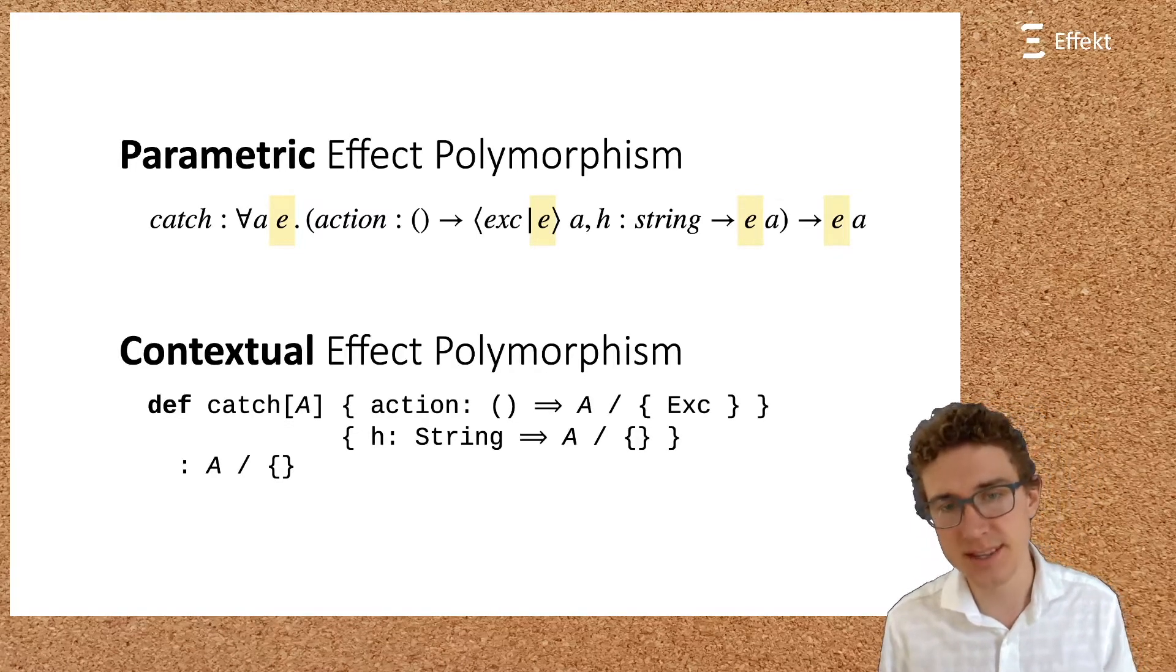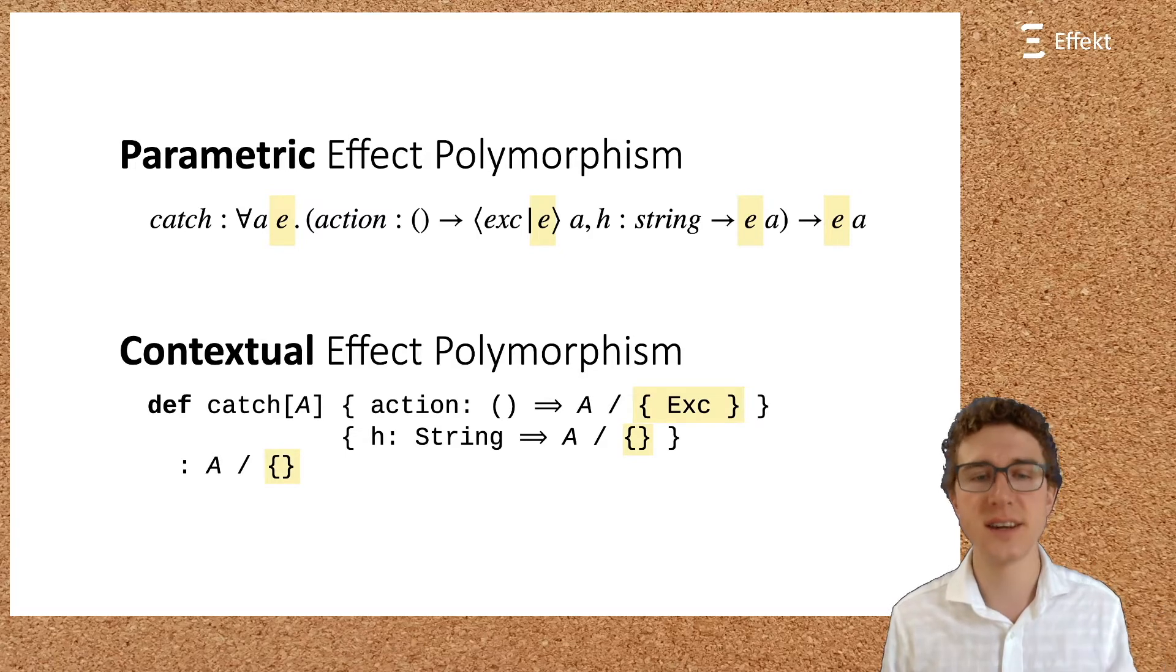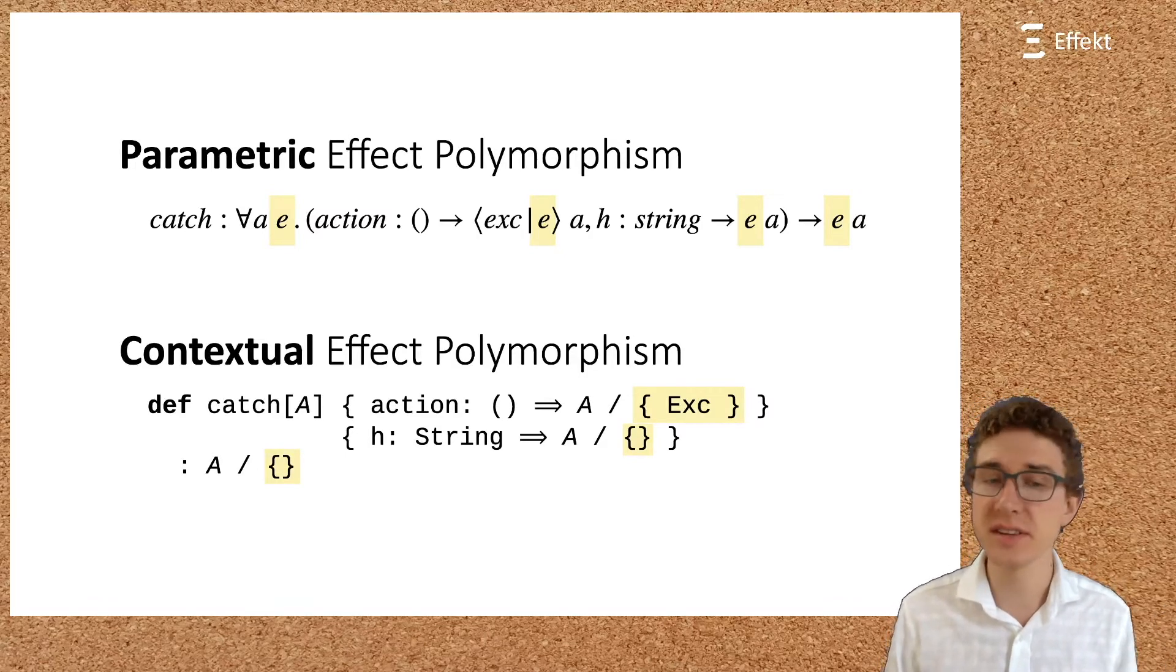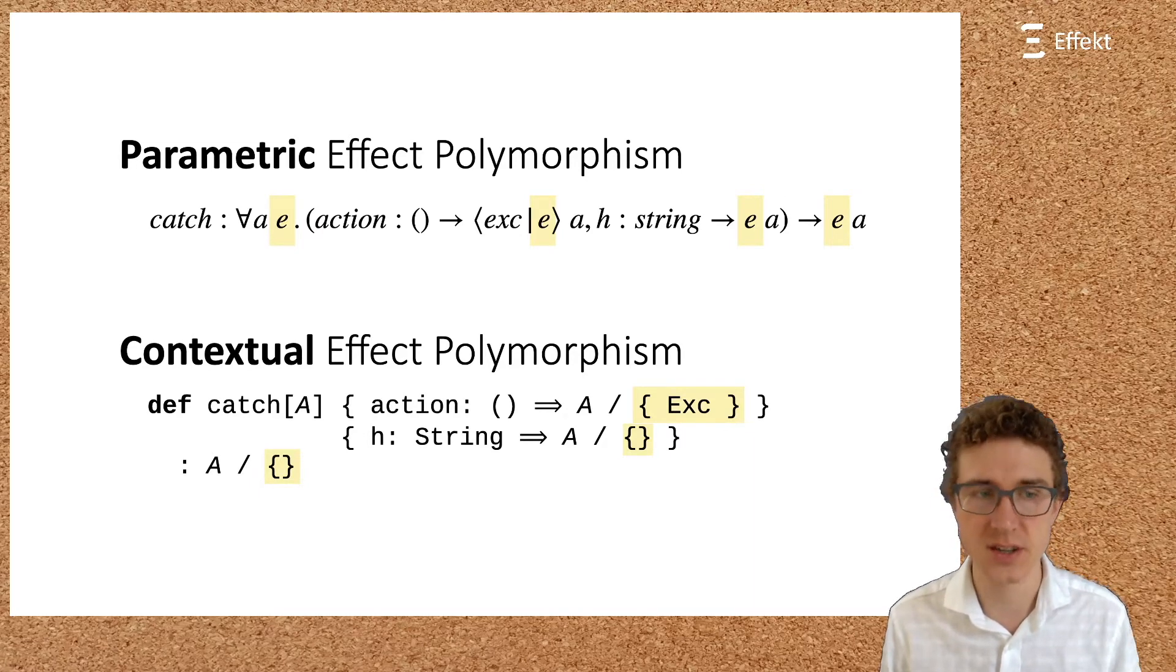Here is the same example in the effect language. Effect introduces a different form of effect polymorphism, which we call contextual. I will go into the details later. For now, it suffices to see that there are no effect variables in the signature.